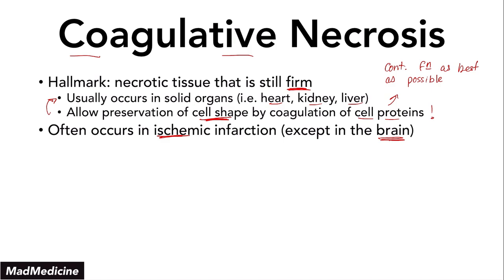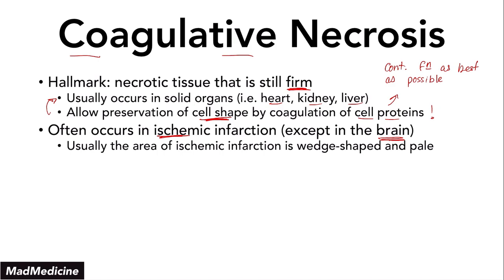In the majority of ischemic infarctions, you're going to see tissues undergoing coagulative necrosis. Usually the area of infarction is going to present as a wedge-shaped infarction, and it's going to be pale. For example, in the kidney, if you have some sort of infarction occurring at the vascular level, you are going to see a wedge-shaped, pale infarction.